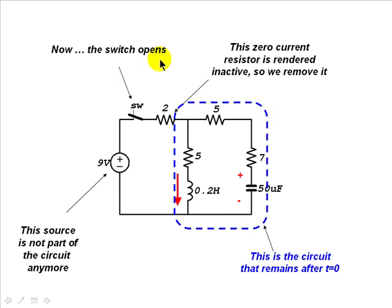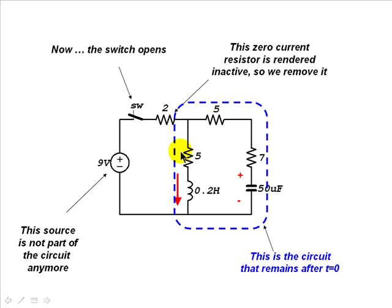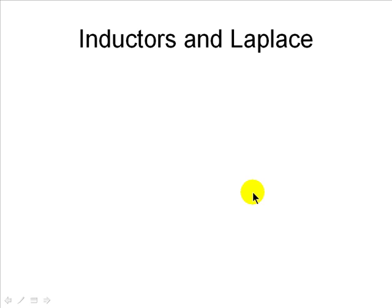Now the switch opens. The source is no longer part of the circuit, and the resistor in that branch will have zero current, so it plays no role. We concentrate our attention exclusively on the remaining loop: three resistors, the inductor, and the capacitor.